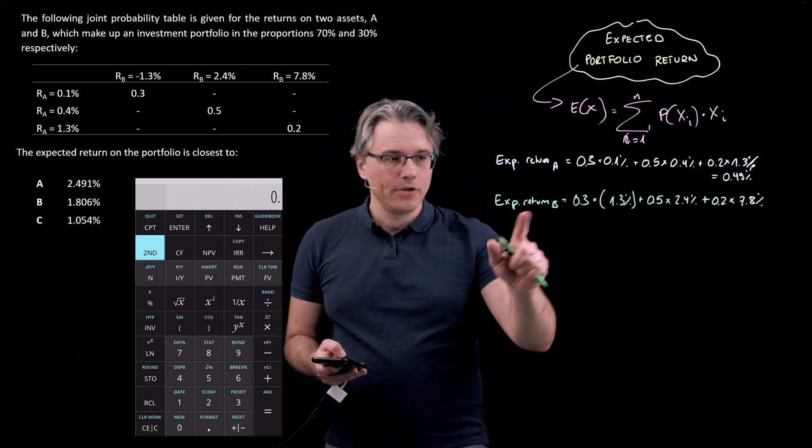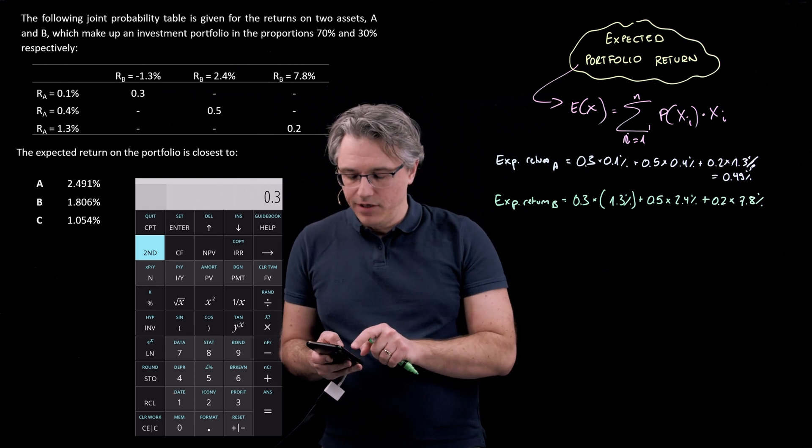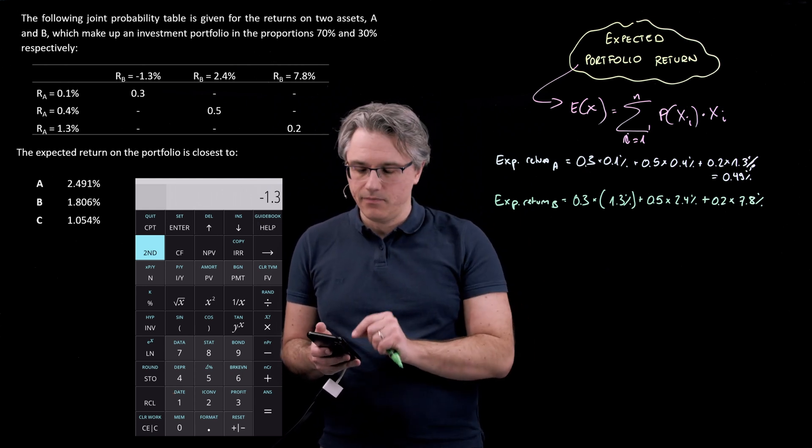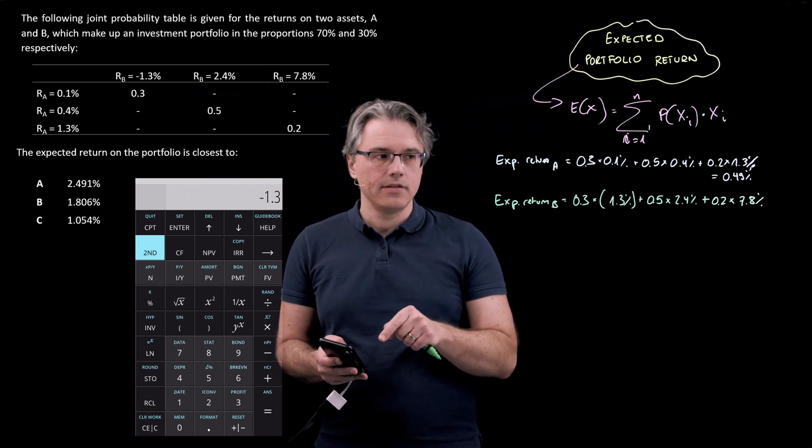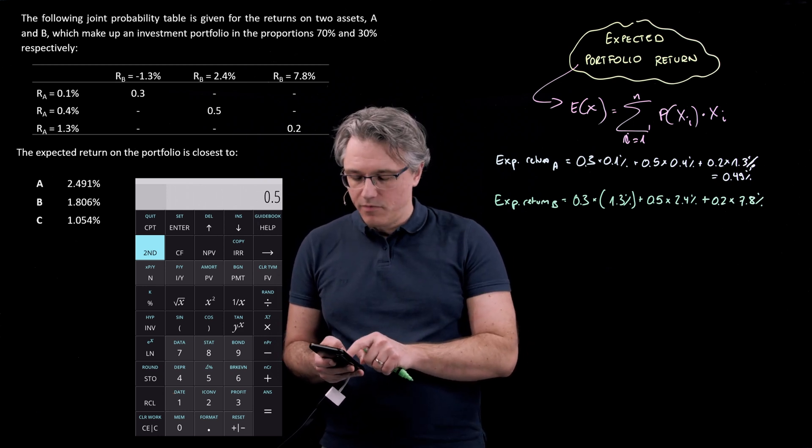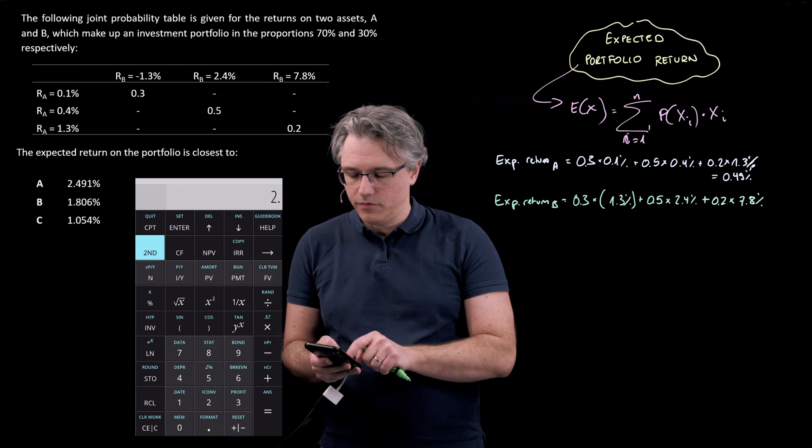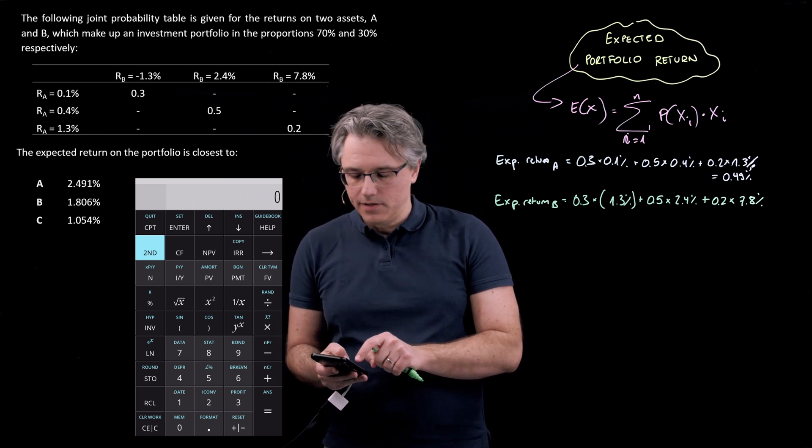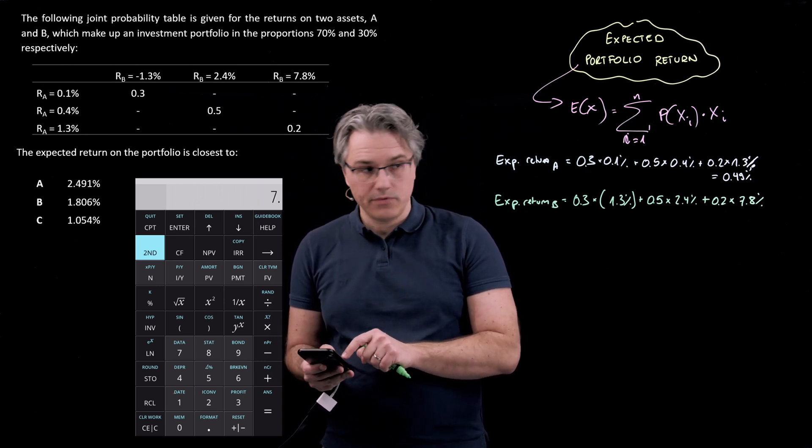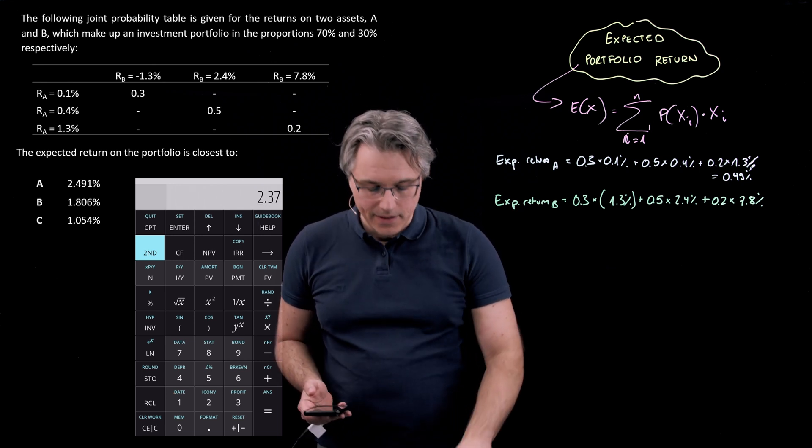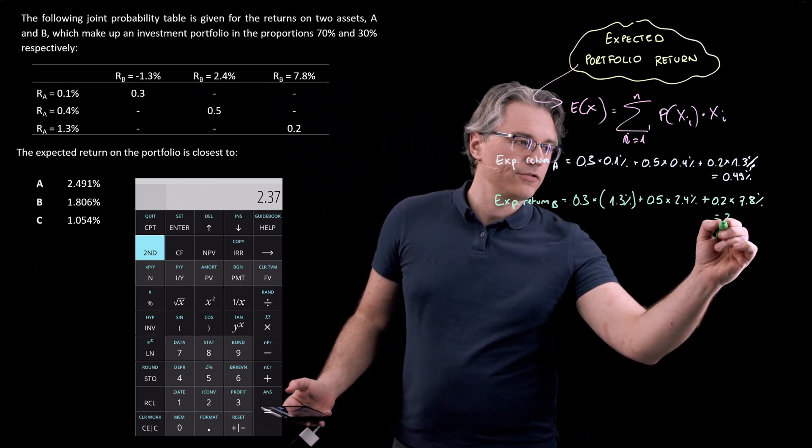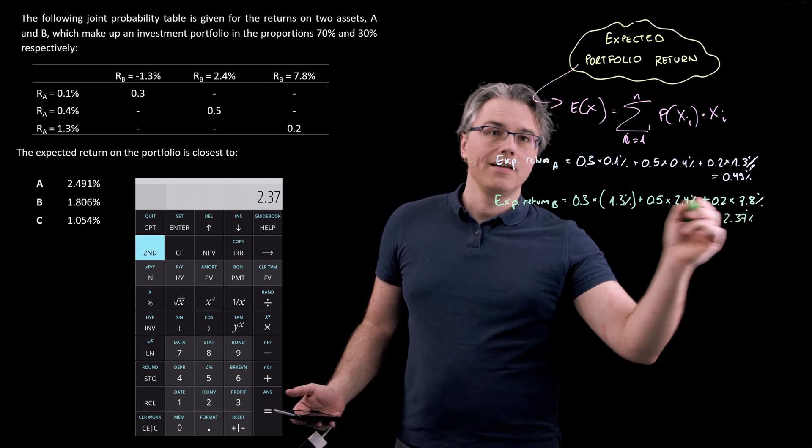Now, for the next one, we're going to have 0.3 times negative 1.3, so plus minus key to insert the negative sign, plus 0.5 times 2.4 and plus 0.2 times 7.8, the final one. That's an expected return of 2.37%.